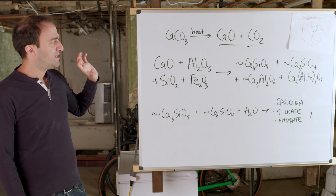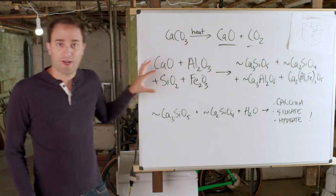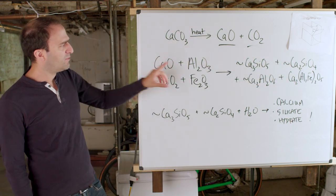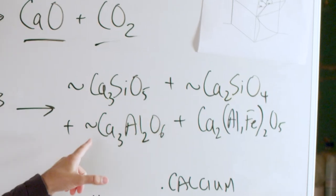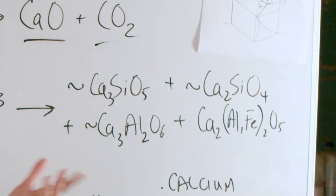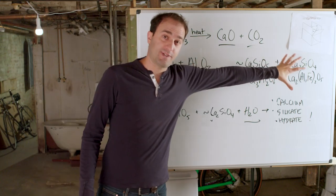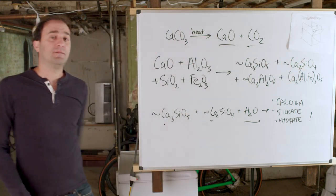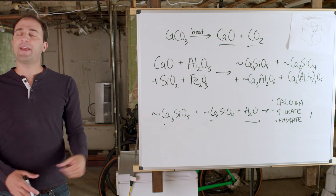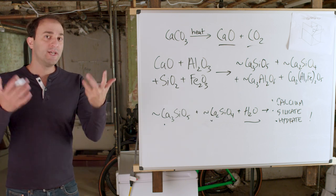The next step is this behemoth of a reaction right here. And if you were wondering what the tildes mean — so was I. It turns out it means the same thing as it does in math: these formulas are approximate. Then you take all of this stuff and you add some calcium sulfate, and at that point what you have is called cement.